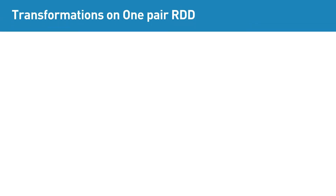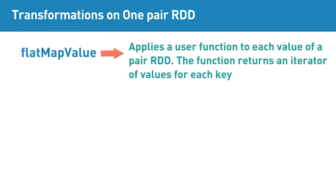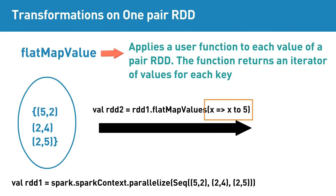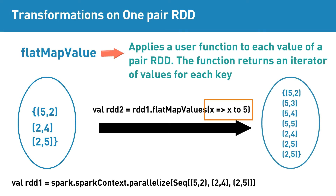flatMapValues is a pair RDD transformation that applies a user function to each value of a pair RDD. The function returns an iterator of values for each key. The flatMapValues transformation returns the key and the corresponding iterator of values. For instance, if the input RDD contains elements (5,2), (2,4), (2,5), then passing the highlighted function to flatMapValues transformation will return the highlighted result as the resultant RDD. Here the key is unaltered, and the value is an iterator of values.